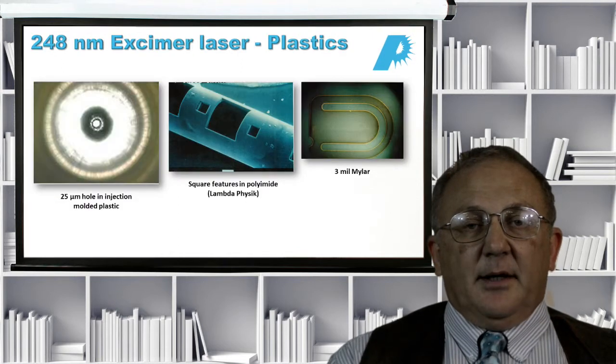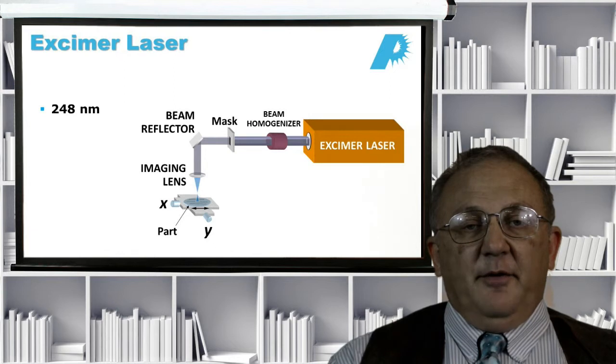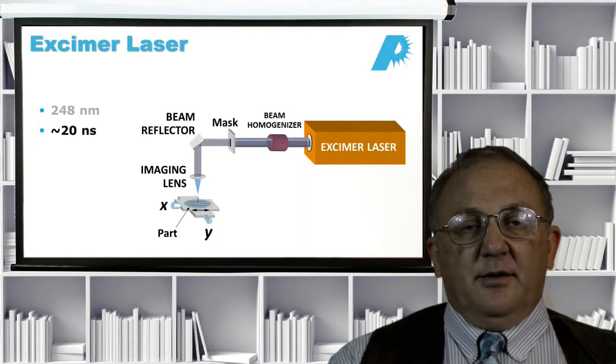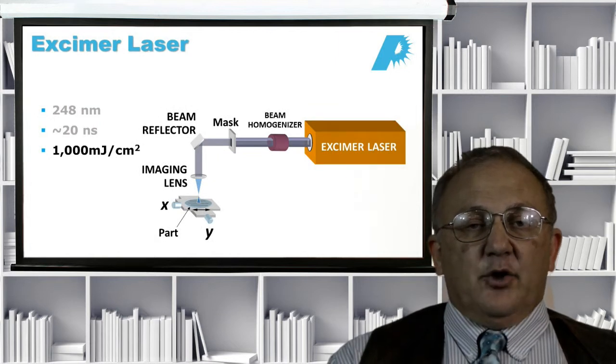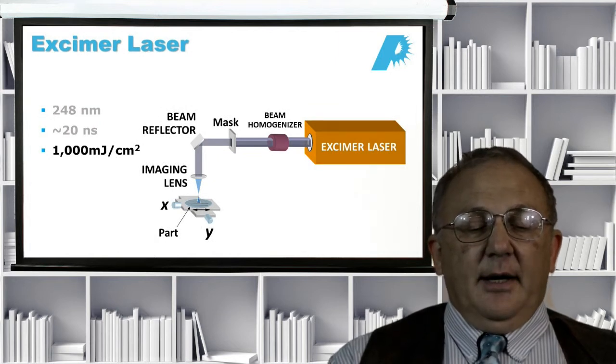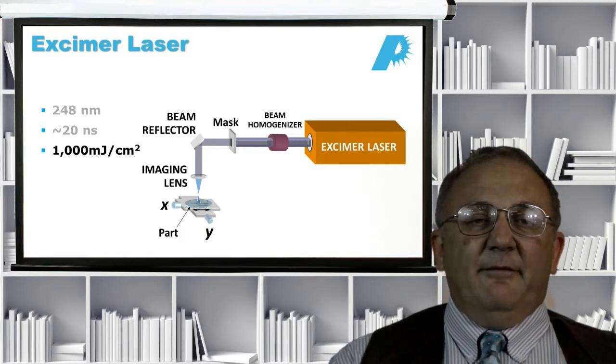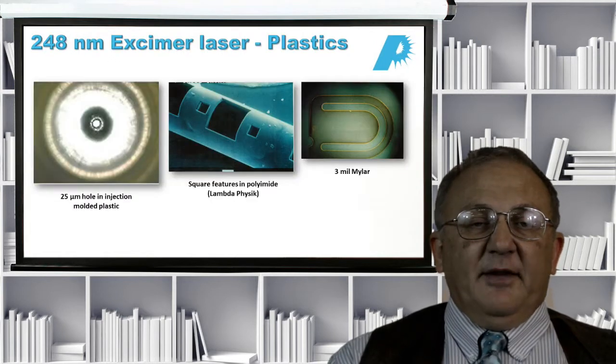So, here's some plastic drilling and cutting with the excimer laser. 248 nanometers is in the UV portion of the spectrum, and also gives very clean results. By the way, the pulse length of these excimer lasers is on the order of about 20 nanoseconds, so it is a nanosecond laser. But it has high energy per pulse and short wavelength, which gives us the capability to get a very high peak power intensity, which, as we saw earlier, is key for clean low taper processing.